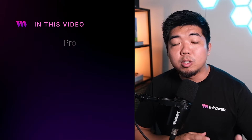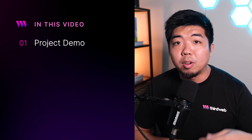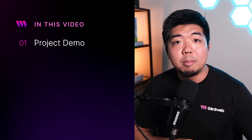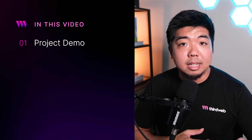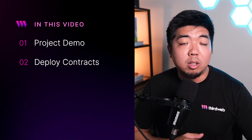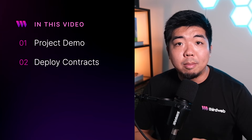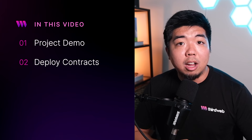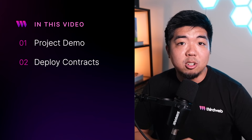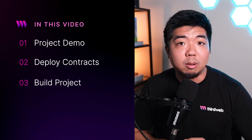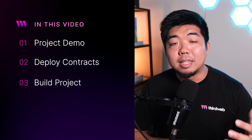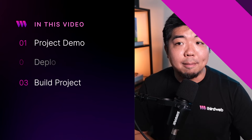So an overview of what we're going to be covering in this video: we'll first go over an overview of the application we're going to be building, we'll demo it out and go over some of the things happening behind the scenes, then we'll jump onto ThirdWeb and deploy the contracts that we need, then we'll jump into our code editor and start building it out. So with all of that being said, let's jump on our computer here and take a look at our app.